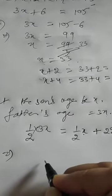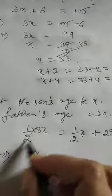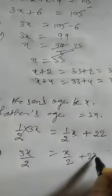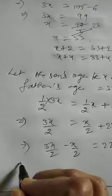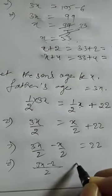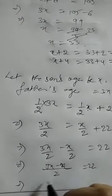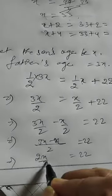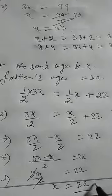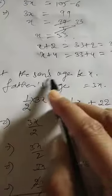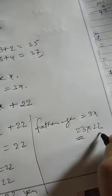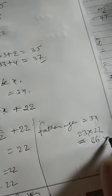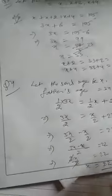Let son's age be x, so father's age is 3x. The equation is: 3x/2 minus x/2 equals 22. Taking LCM: (3x minus x) over 2 equals 22, giving 2x over 2 equals 22, so the 2s cancel and x equals 22. Son's age is 22. Father's age is 3x, so 3 into 22 equals 66 years.